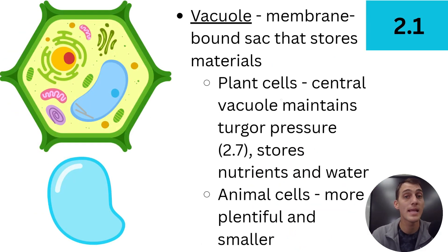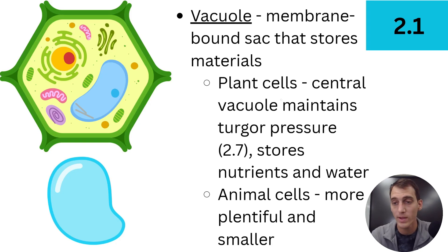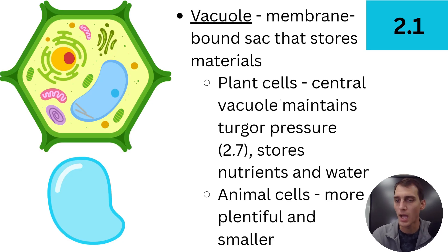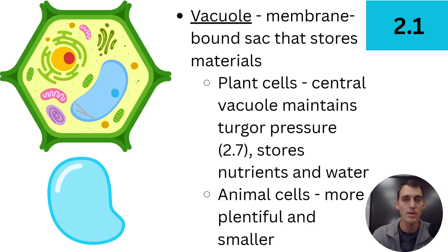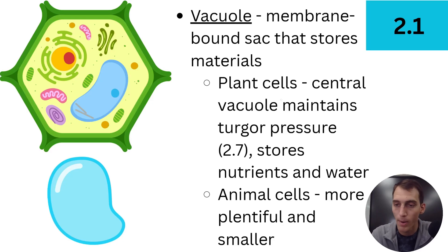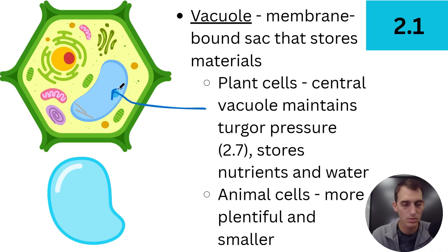Let's get into vacuoles — a membrane-bound sack that stores materials. It's similar to a lysosome, except instead of breaking stuff down, it stores things. It's a storage unit for the cell. In plant cells, you have what's called a central vacuole — the big bubble right in the middle of the plant cell. It stores a whole lot of water and some nutrients.